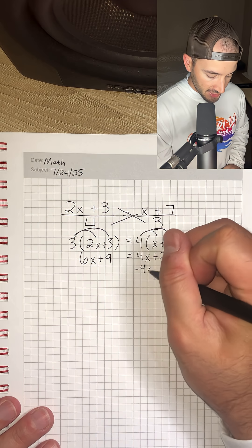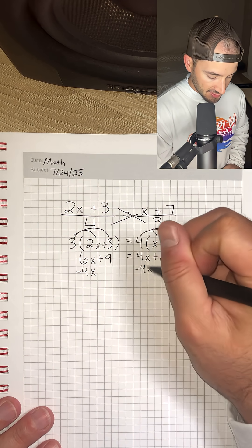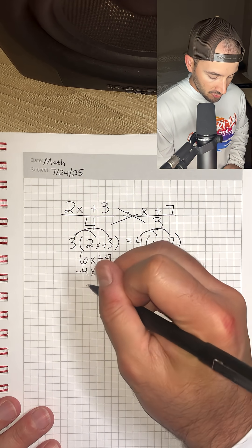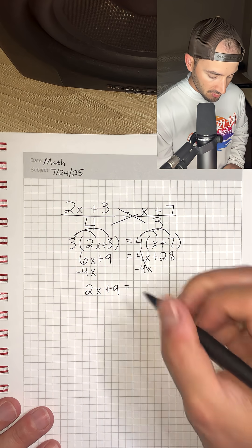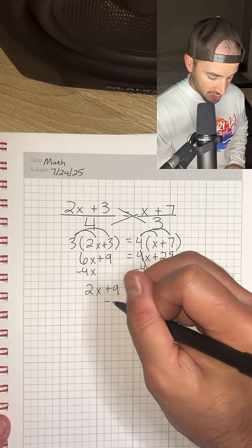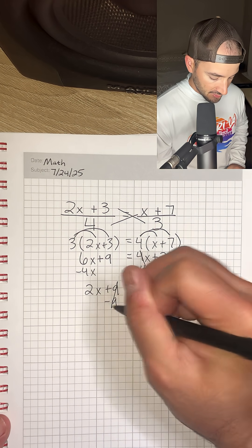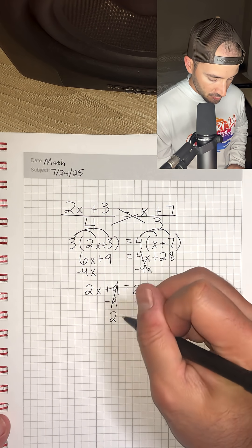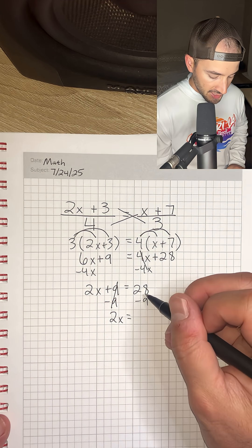Now we're going to subtract 4x from both sides. That's going to cancel and leave us with 2x plus 9 is equal to 28. Now we can subtract 9 from both sides. That'll cancel and leave us with 2x is equal to 19.